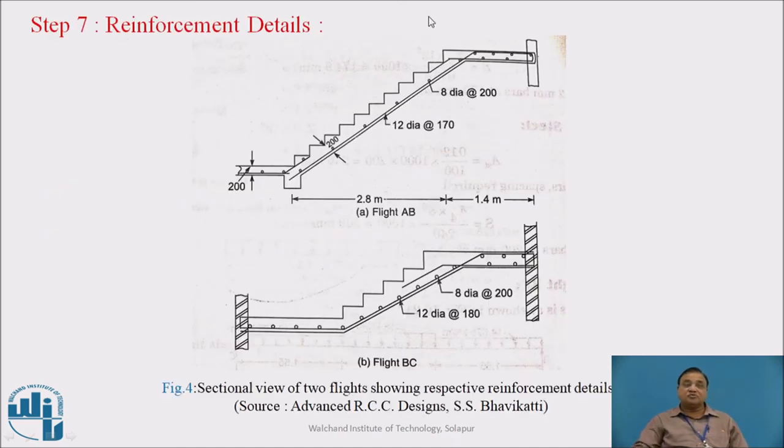Step 7: Reinforcement detailing. This is reinforcement detailing for the first flight AB. Here there is a beam, here there is a wall. Bottom steel is main steel: 12mm diameter bars at 170mm center to center provided at bottom. Above that are dots representing distribution steel, which is 8mm diameter bar HYSD at 200mm center to center. Here at the wall we get fixity, therefore bottom main steel is taken up to the top, so we get top and bottom steel here.